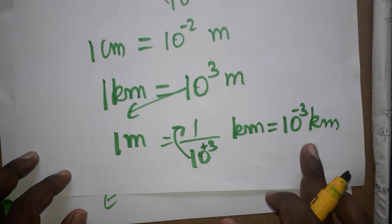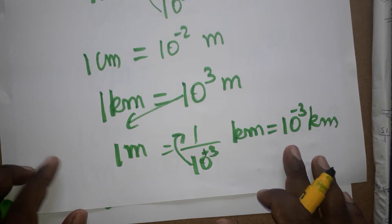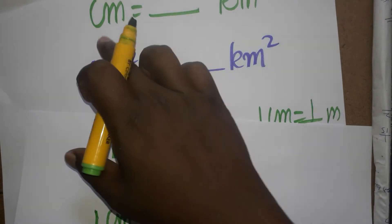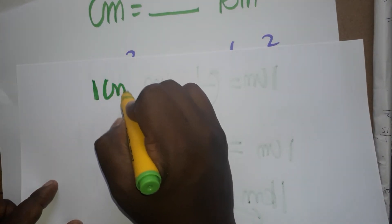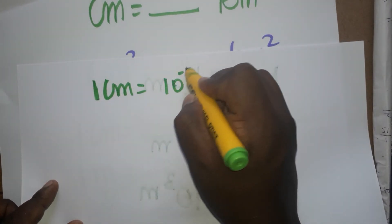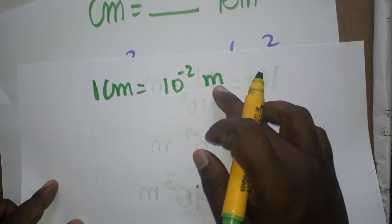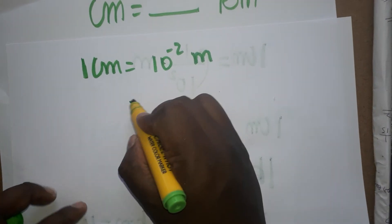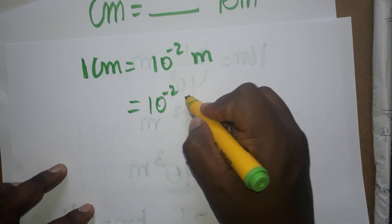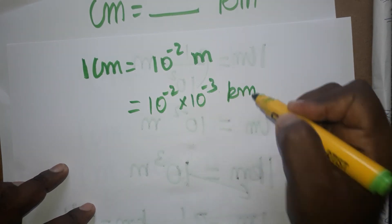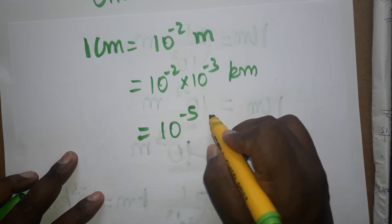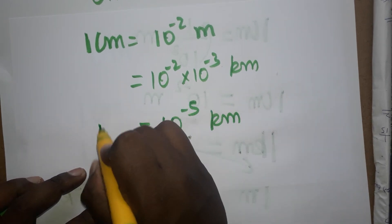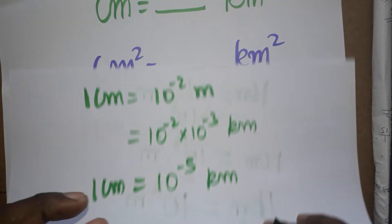So 1 cm is 10 power minus 2 m into 10 power minus 3 km per m, giving us the conversion from cm to km.